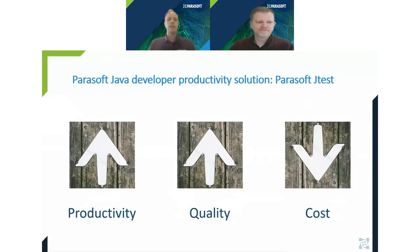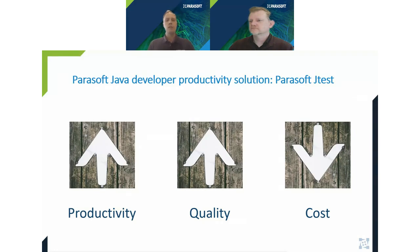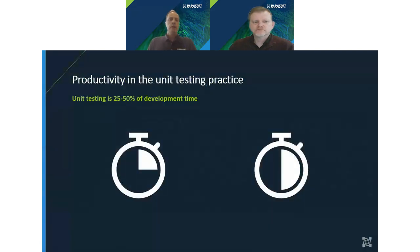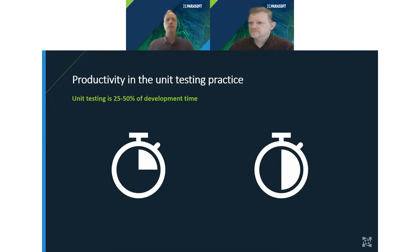Today we want to discuss how we at Parasoft, as well as a number of our customers, use our Java developer test productivity solution — also known as Parasoft JTest — to increase the productivity of their development teams, maintain high levels of quality as they push out functionality, while minimizing the cost of software development. We're specifically focusing on productivity in the unit testing practice, since unit testing is expensive to do well. Estimates are that it can take somewhere between 25 to 50 percent of a development team's time to write and maintain unit tests.